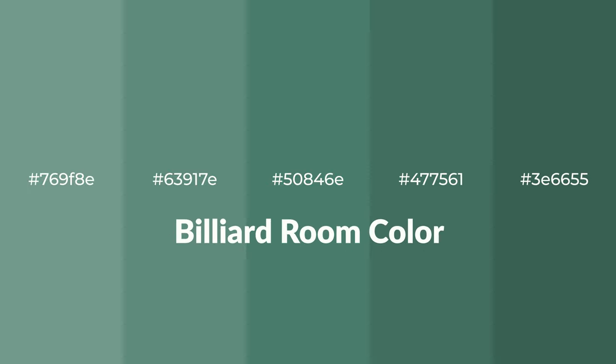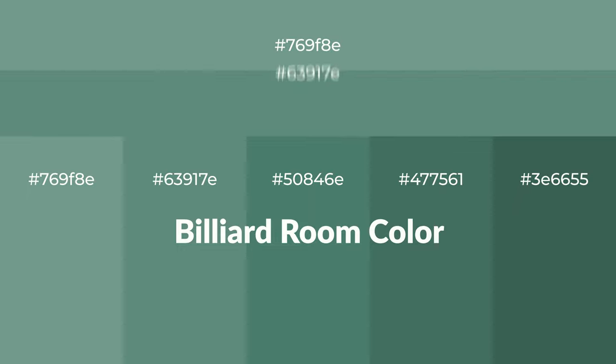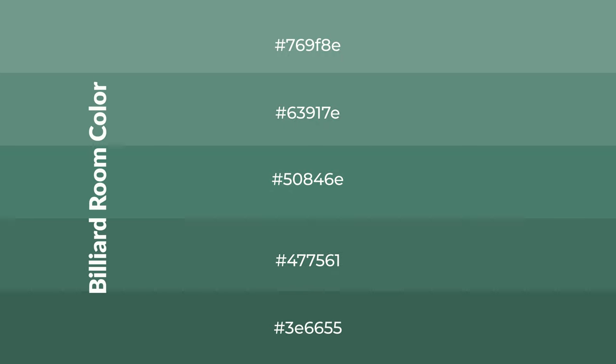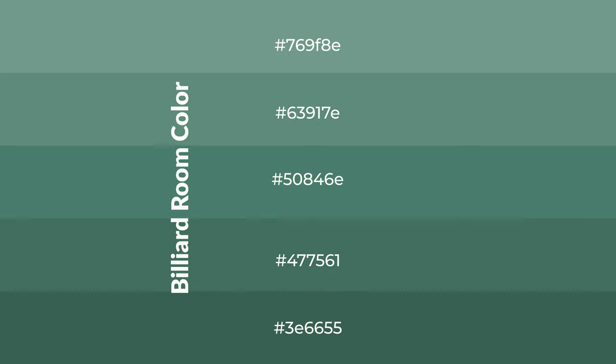Cool shades of billiard room color with green hue for your next project. To generate tints of a color, we add white to the color. Tints create light and exquisite emotions. To generate shades of a color, we add black to the color.